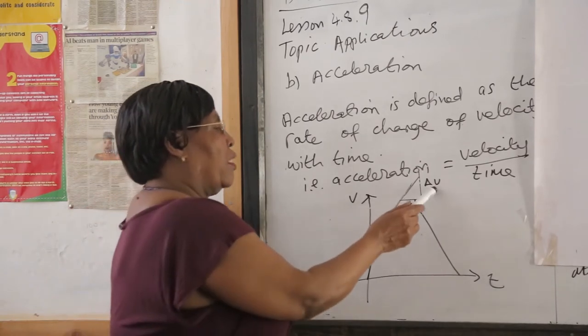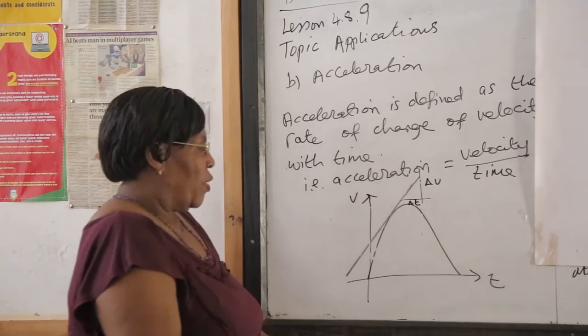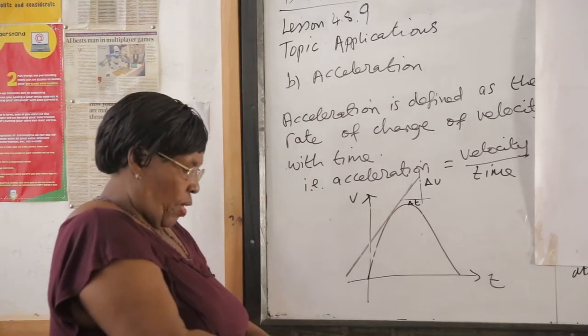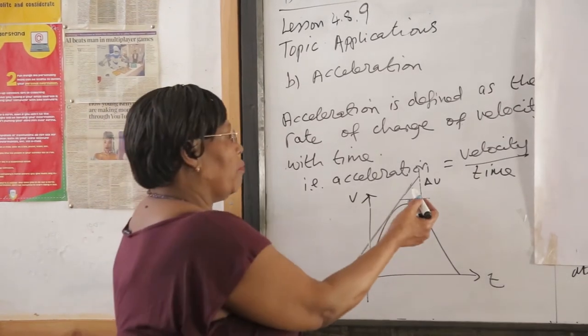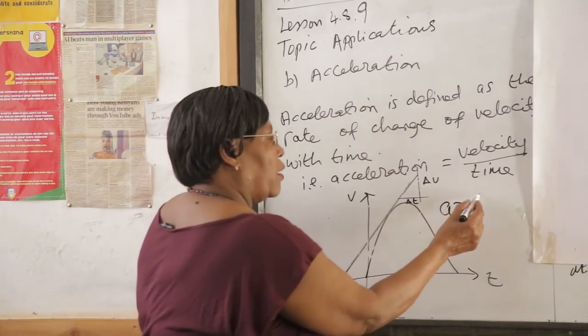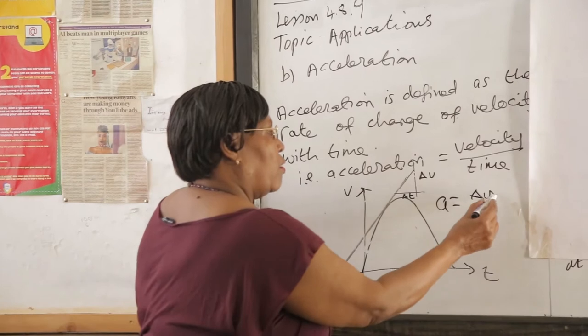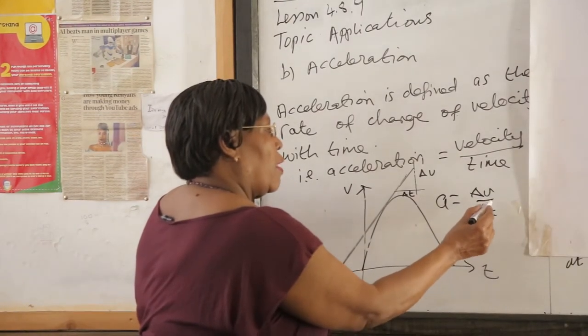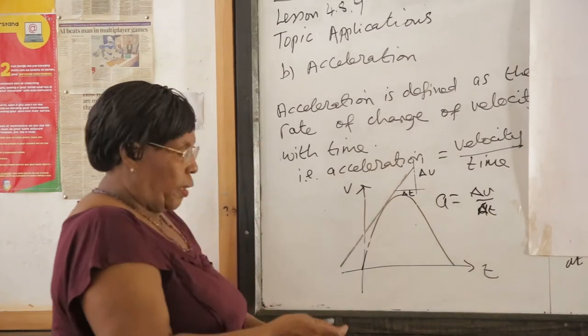We can see therefore change in velocity to change in time gives us acceleration. So this is where we are saying that A is equal to the rate of change of velocity with time, dV/dt.